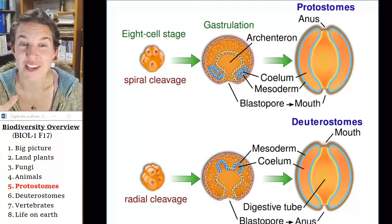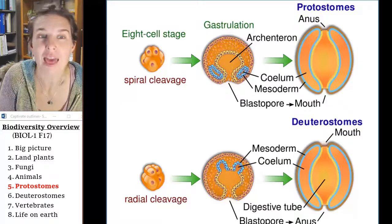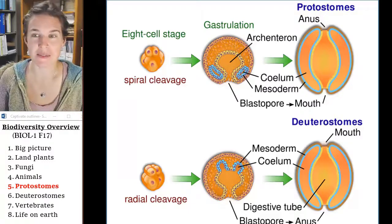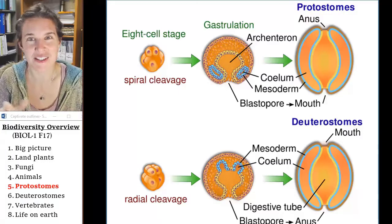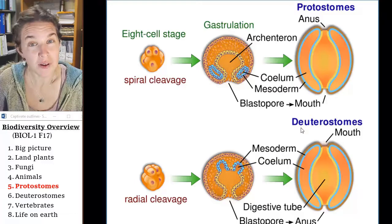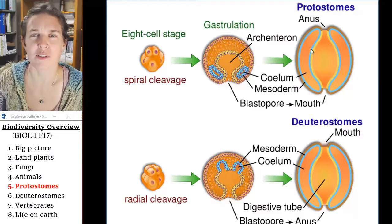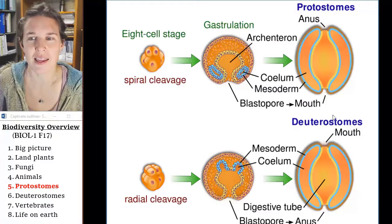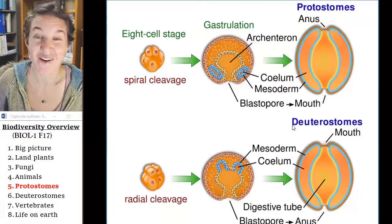But the blastopore could have another fate — the blastopore could become the other end of the tube, the anus. If the blastopore becomes the anus, then the critter is a deuterostome. I remember deuterostomes had blastopores that became anuses because anuses make doo-doo for the deuterostomes. Anuses make doo-doo for the protostomes too, but the anus came first in the deuterostomes.